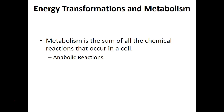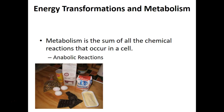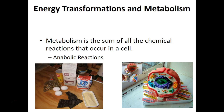Let's look at anabolic reactions. We start with small subunits — in this example, flour, sugar, nuts, baking powder, butter, eggs, chocolate, all the fixings to make a cake. We mix them all together, put them in the oven, and we make a beautiful cell cake. That's an anabolic reaction.